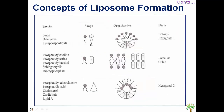This is the reason why soaps, detergents, or micelles cannot form liposomes. Soap and detergent molecules have a single acyl chain and form a conical shape, so they can only form micellar structures or hexagonal type I structures. If a molecule has two acyl chains, it forms a cylindrical shape and can form lamellar or cubic structures. But if the acyl side chains are very long, as in the case of cholesterol or phosphatidylethanolamine, they may form hexagonal type II structures.